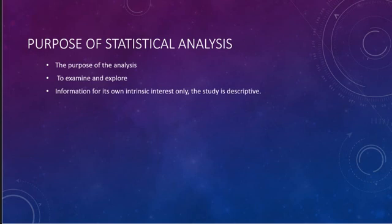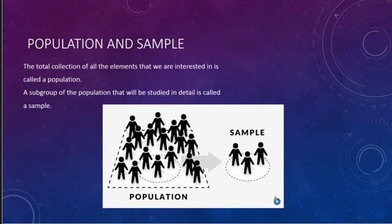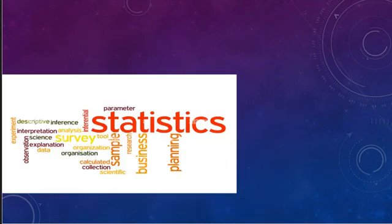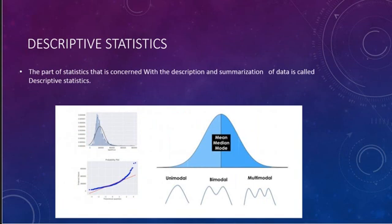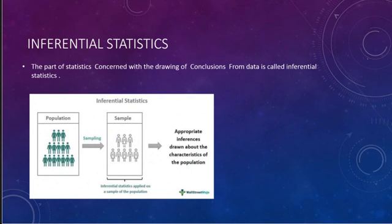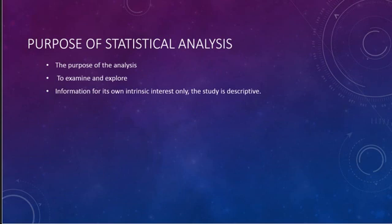In descriptive statistical analysis, we use graphs and visual tools. In inferential statistical analysis, we use populations and samples. To summarize: descriptive statistics is completely based upon the data collected, while inferential statistics is based upon the population and the sample. These are the basic concepts in statistics — the major branches and introduction have been covered. That is all for today's class. Thank you.